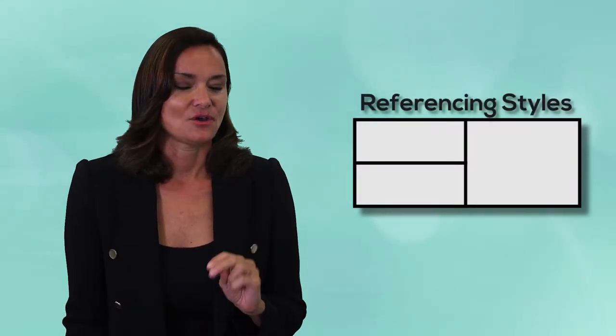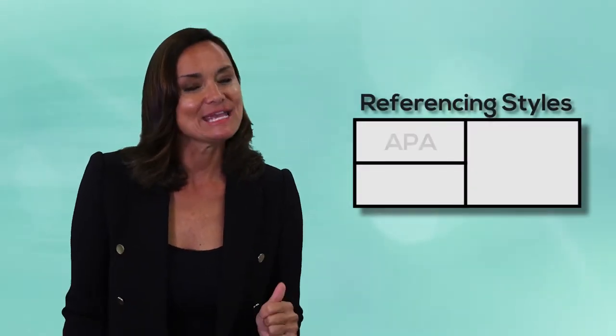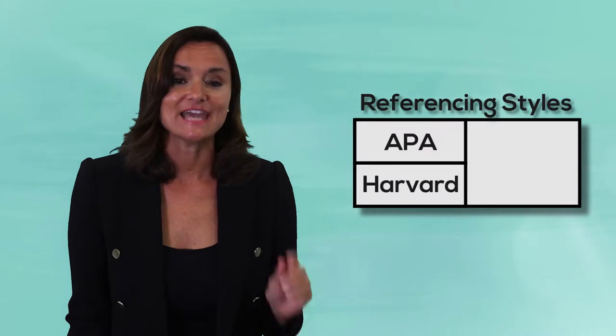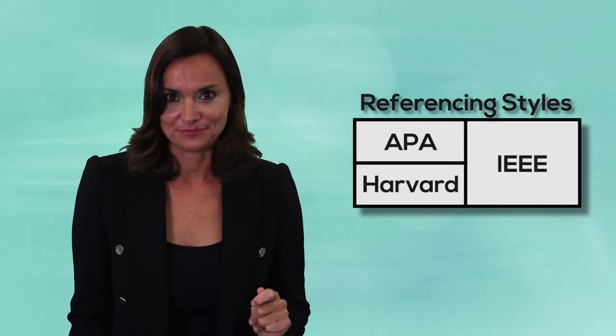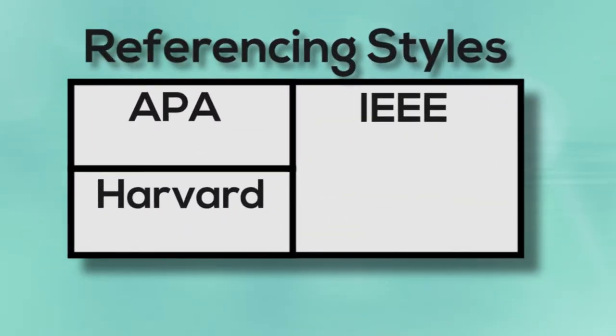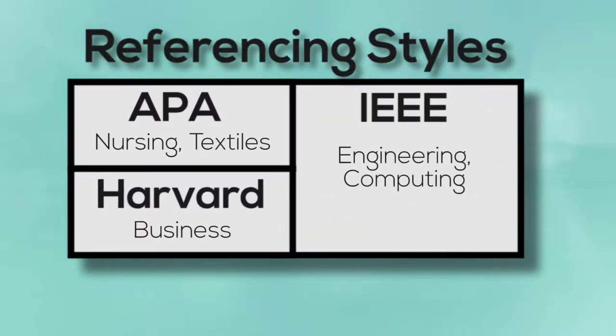Okay, so referencing at university is very important. We've divided this whole course into two parts: one for APA and Harvard styles, and the other for IEEE style. Depending on which discipline you're studying, you'll need to choose one of these referencing styles.